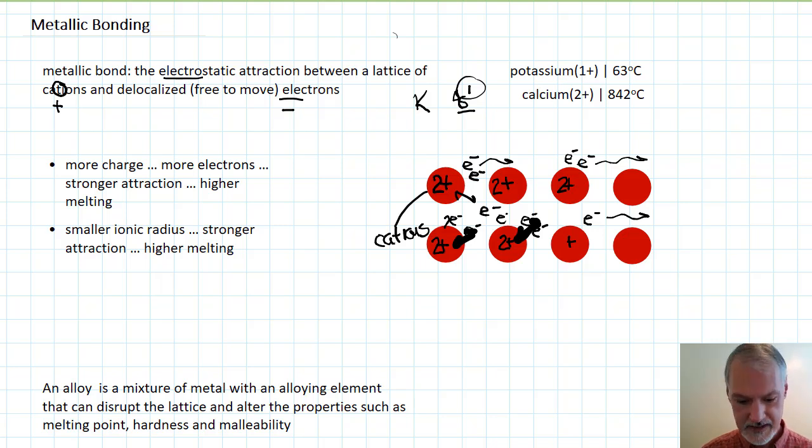Another factor that affects the strength of this metallic bond is the distance between the nucleus and those electrons. Smaller atoms would be able to exert a greater pull. So for instance, sodium, which lies underneath potassium in the periodic table and is smaller, melts at 98°C.